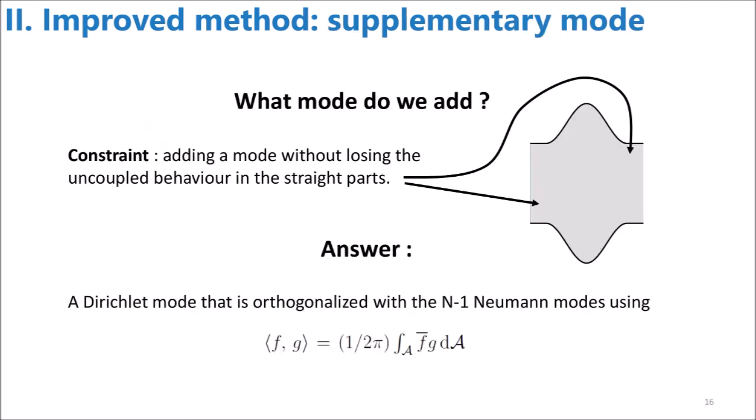Okay, we must add a mode with a boundary condition that differs from the others, but this doesn't tell us what mode should we add. So, to lead us toward an answer, we consider the following condition. Adding the mode must preserve the uncoupled behavior in the straight parts of the waveguide. This is achieved by taking the same kind of standard mode than before, but with a Dirichlet boundary condition instead of a Neumann one. Then, this mode must be orthogonalized with the other modes, which finally gives us the supplementary mode.